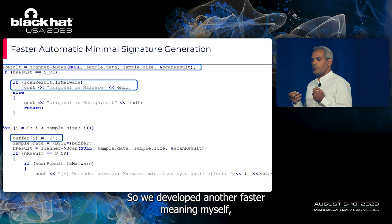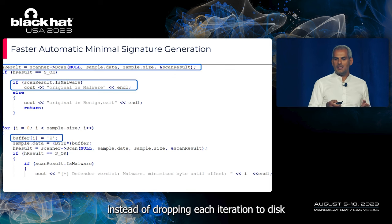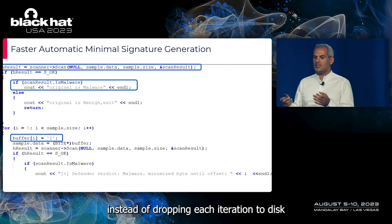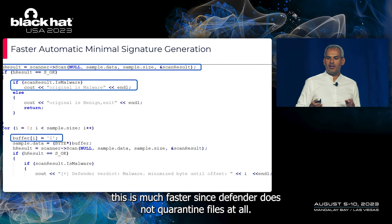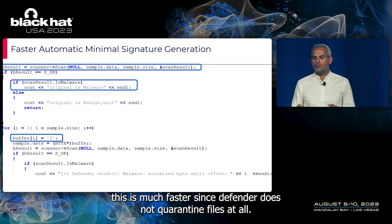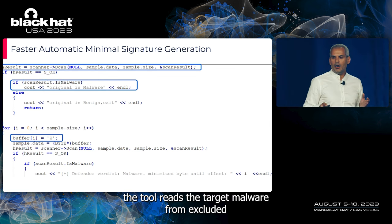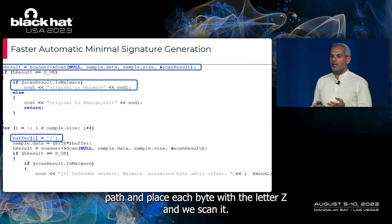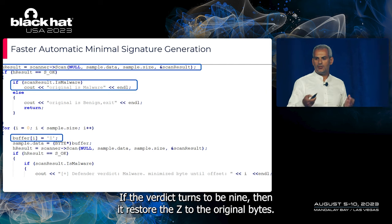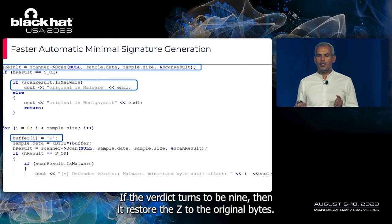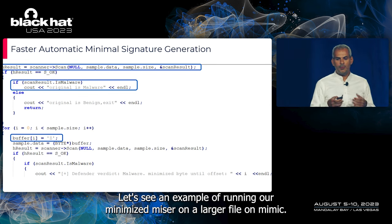We developed a faster minimizer tool that calls the Defender scan exported function directly, instead of dropping each iteration to disk and waiting for detection. This is much faster since Defender does not quarantine files at all using this technique. The tool reads the target malware from an excluded path, replaces each byte with the letter 'Z', and rescans it. If the verdict changes, it restores the 'Z' to the original bytes. We ran our minimizer on Mimikatz's binary as an example.